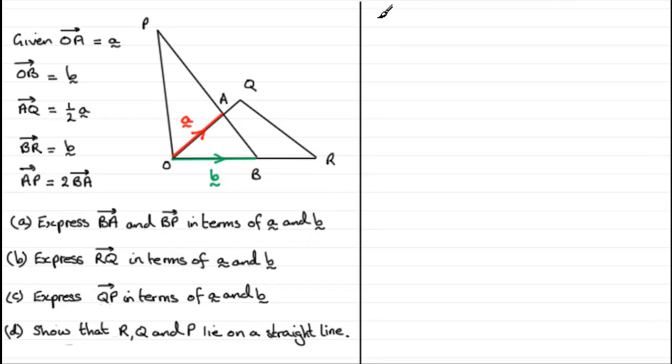So first of all we've got to express BA and BP in terms of a and b. So let's start then with part A. BA, this is nice and easy. BA is going to be the same as going from B to O followed by O to A. So that's minus b plus a, but you might prefer to write it the other way round as a minus b.